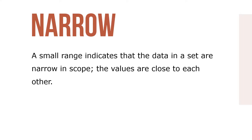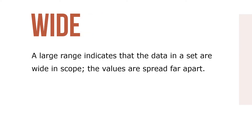A small range indicates the data in a set are narrow in scope — the values are close to each other. A large range indicates that the data in a set are wide in scope — the values are spread far apart.